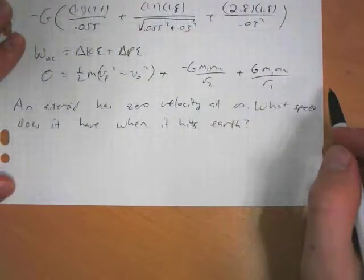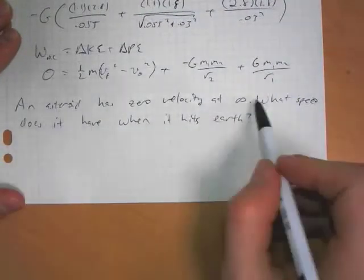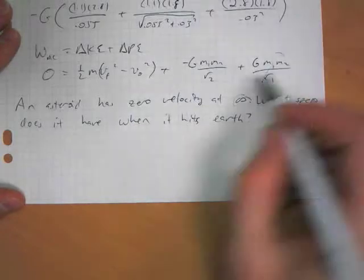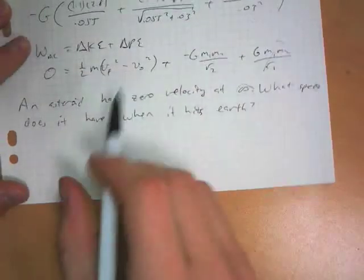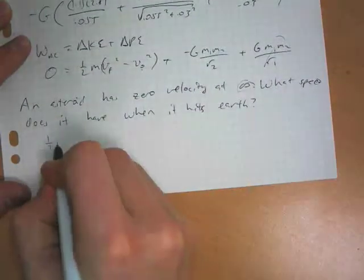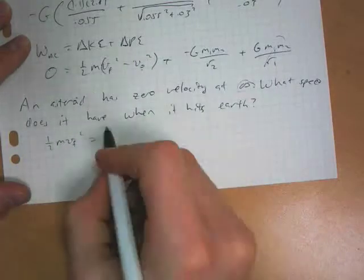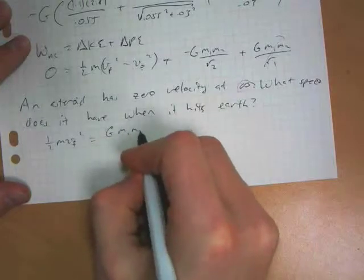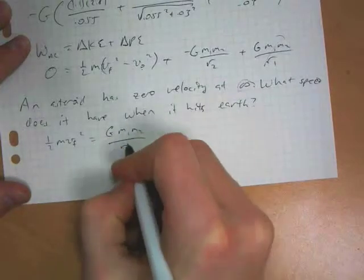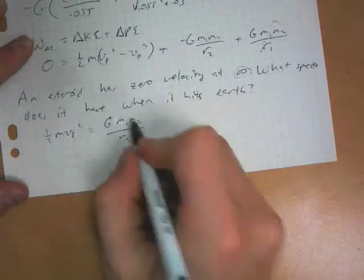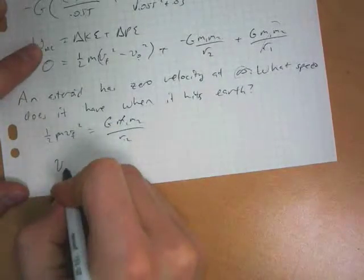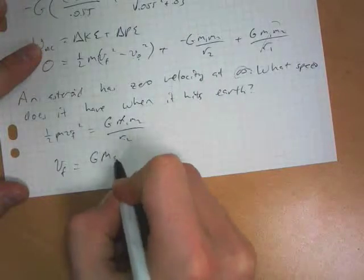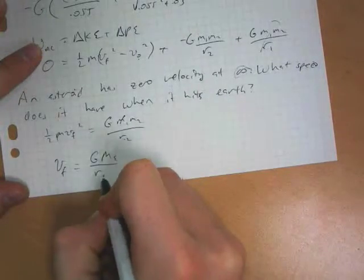Well, we can solve this by using conservation of energy. At infinity, this is zero, and our V naught is zero. So you can say one-half M V final squared, equals, move this over, G M1 M2 over R2. R2 is just the radius of the Earth. The masses cancel out. So we have the final velocity object is G, second mass is mass of Earth, over radius of the Earth times two, square rooted.